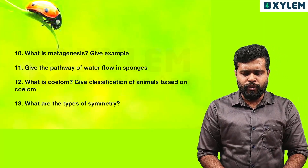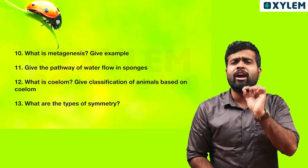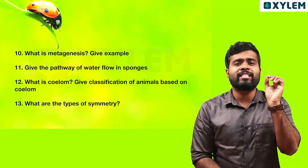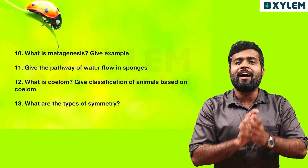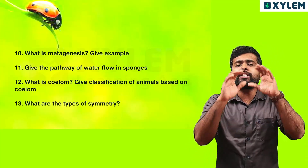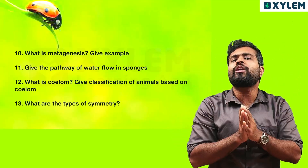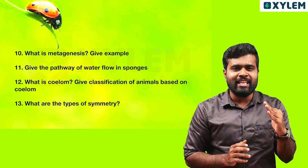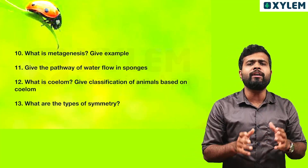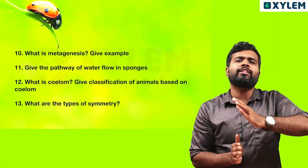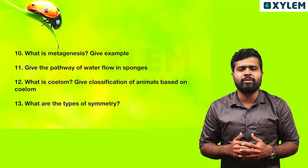Next question: give the pathway of water flow in sponges. Sponges have a pathway — there are holes in sponges called Ostia. Water enters through Ostia, then goes into the body cavity called the spongocoel, and exits through the opening called the Osculum. So the pathway is: Ostia → spongocoel → Osculum.